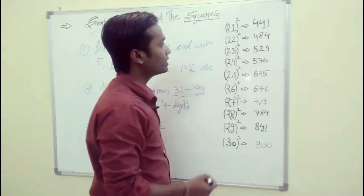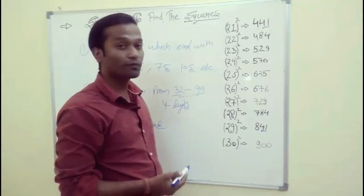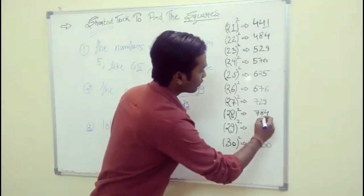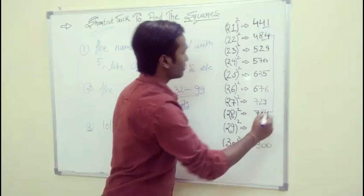Again, if you see that the square of 22 is 484 and the square of 28 is 784. Again, the last two digit numbers are same.